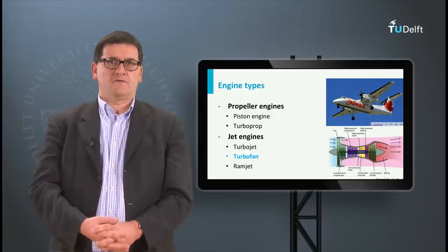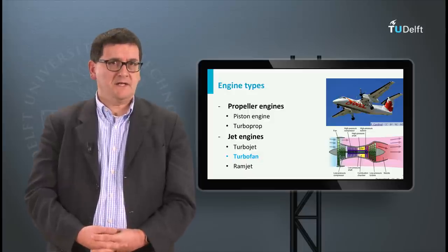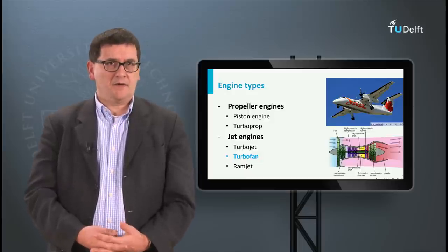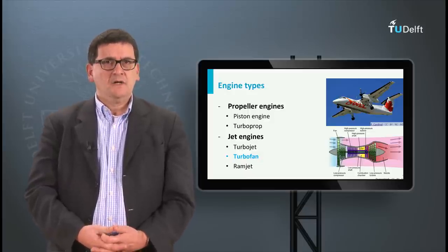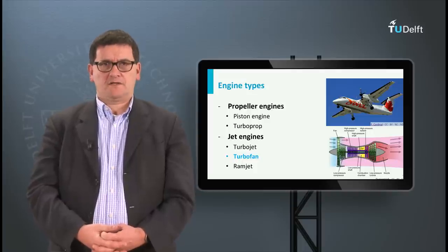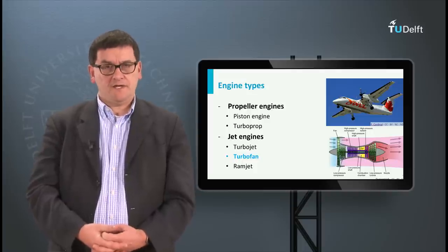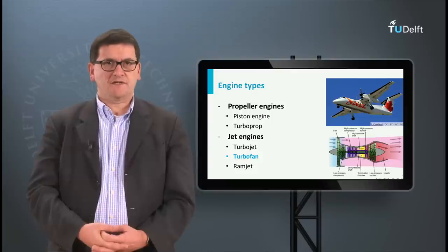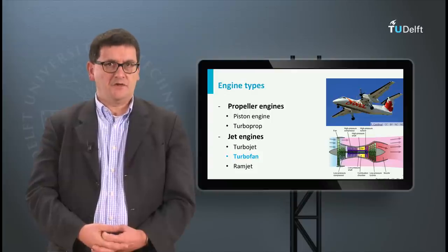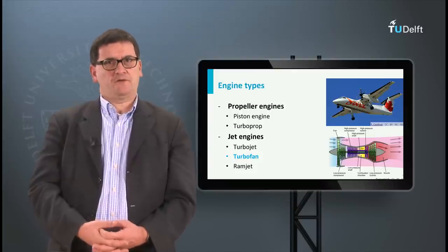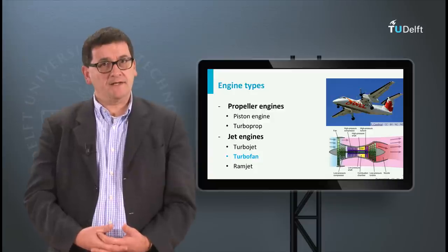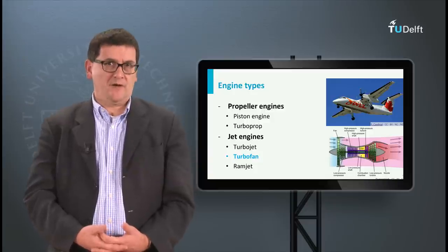The bypass ratio is the ratio of the amount of air that is bypassed relative to the amount of air flowing through the hot section. Today bypass ratios of 8 exist and this number is still increasing. A turbojet has no bypass, and a ramjet has no distinct compressor or turbine. In the ramjet, the air is compressed by specially designed inlets and shockwaves.